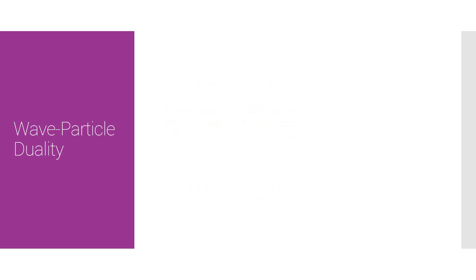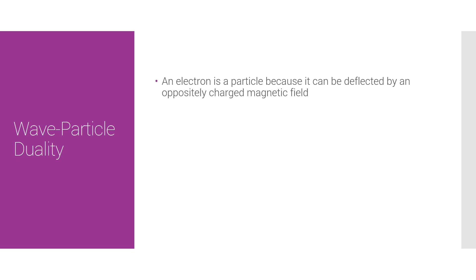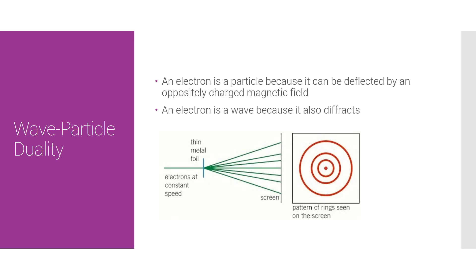We can also prove electrons have dual nature. I bet you didn't know electrons were waves as well. On one hand, it's a particle obviously because it can be deflected by an oppositely charged magnetic field, which shows that it has charge — waves can't have charge. But we also know it's a wave because electrons can diffract too, as you can see here.